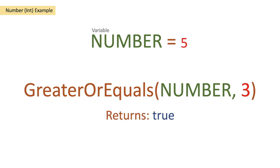It is greater than 3. However, it's not equal to 3. But because one of these arguments is true, it returns a true.